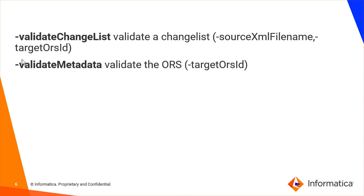So these are the five to six options required to run the metcommand utility from the command line: get ORS metadata, create change list, apply change list, validate ORS, and validate change list. Additionally, you can optionally pass an output file name or the siperian_connection.properties file.